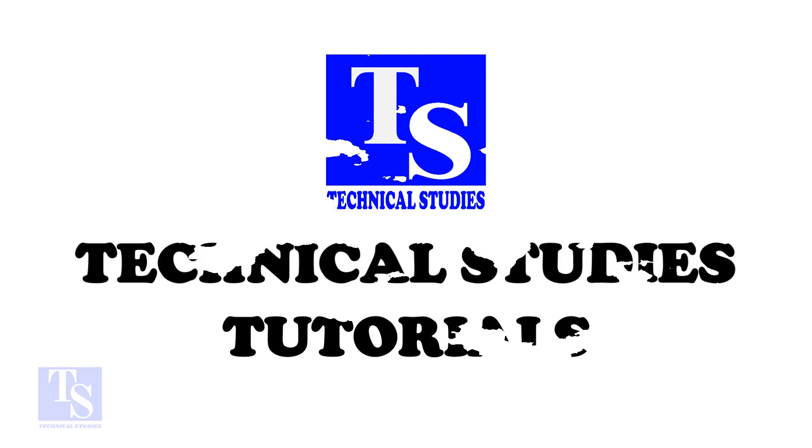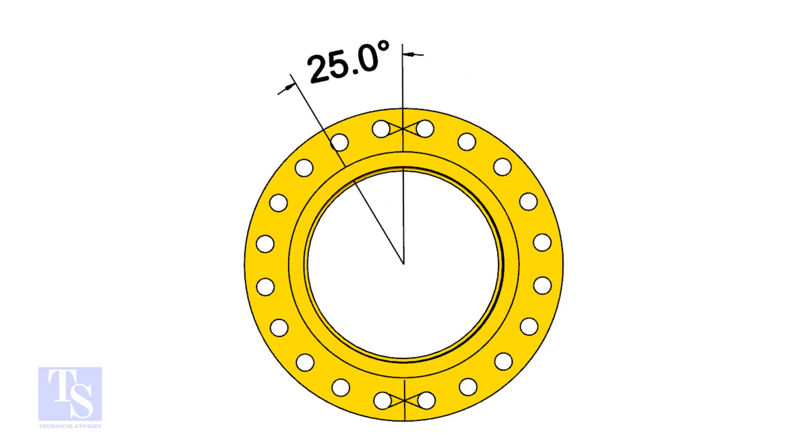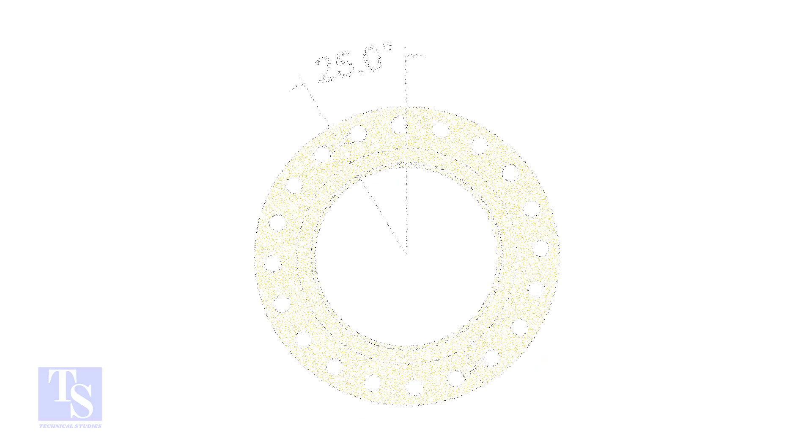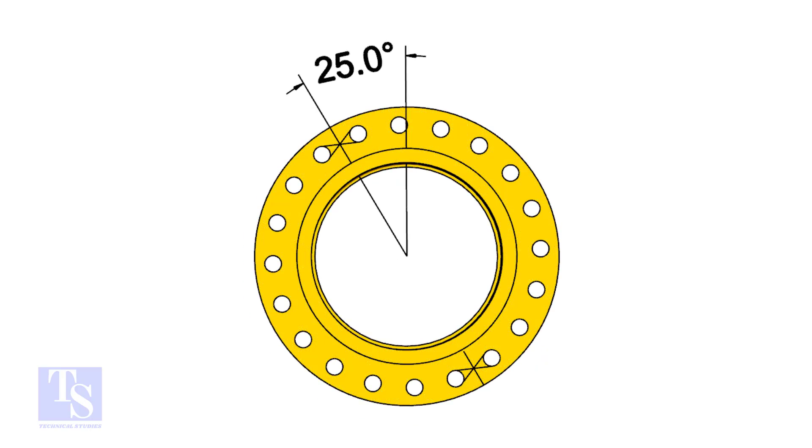The pipe and the flange size is 16 inch, and the flange will rotate 25 degrees anticlockwise. Hope you all know the difference between clockwise and anticlockwise rotation.